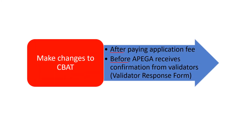Please note that you will be able to make changes to the CBAT forms after paying the application fee in Step 12 of the application, in order to then submit the form a final time. However, you cannot make any changes to your responses in the CBAT forms for the key competencies after APEGA has received confirmation from your validator for a competency. Just for your information, your validators have to provide their confirmation by completing the Validator Response Form, or VRF.